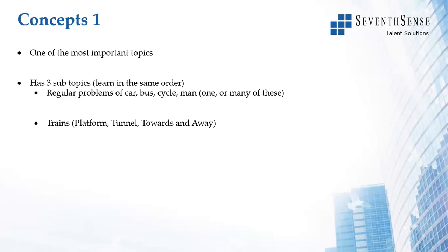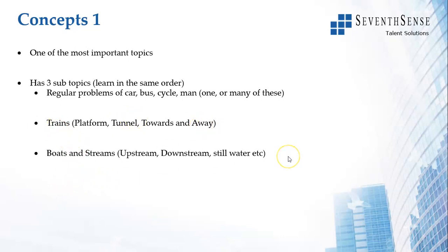Trains will be discussed in detail in a separate video. The third set is known as Boats and Streams — boats in the water, with a speed of the boat, going in the same direction or opposite direction as the water. They could be going downstream or against the direction of flow. I will explain trains and boats and streams in detail in a subsequent video. Here we look at regular problems of car, bus, cycle, and man.